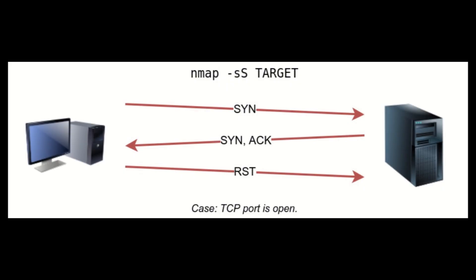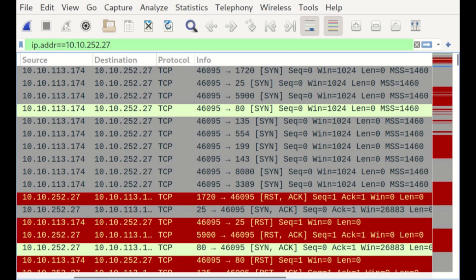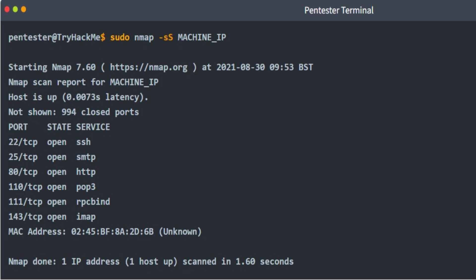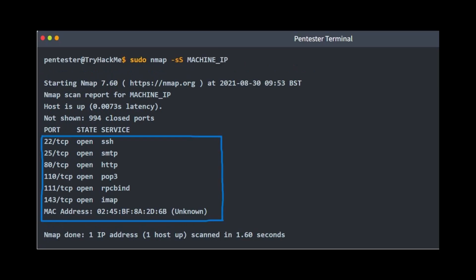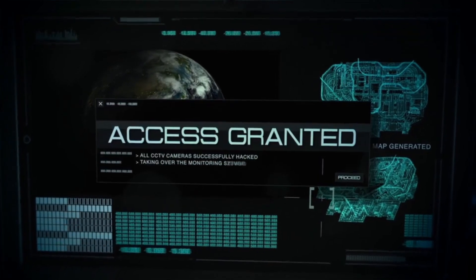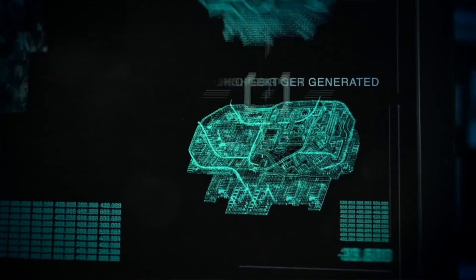A stealth scan, also known as a half-open scan, sends a SYN packet to a port. The three-way handshake doesn't occur because the original system doesn't reply with the final ACK. At this point, you've discovered an open port. But because an ACK packet wasn't sent, a connection wasn't actually made, and there is no security log. This scan is more appealing to hackers, so you as a cyber defense analyst need to be aware of it and safeguard against it.